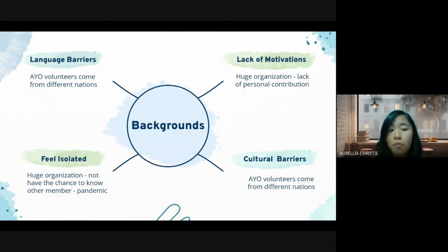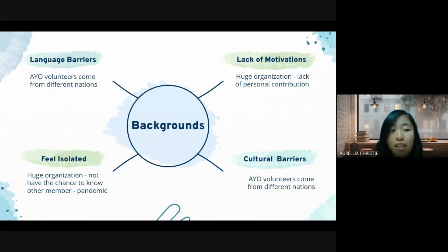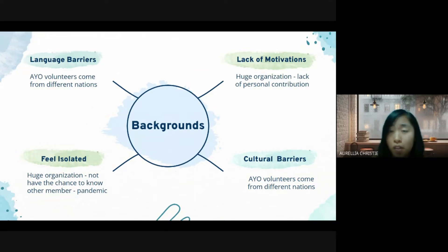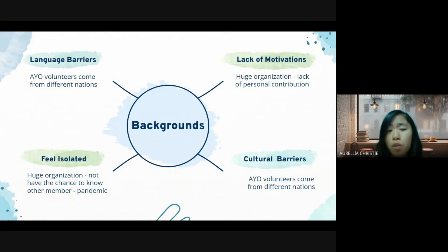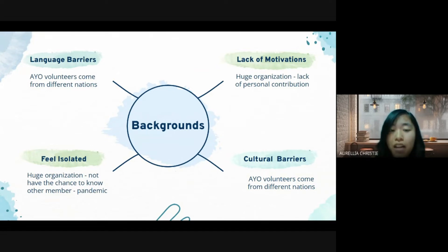Next, lack of motivation. AYO is a huge organization with a lot of volunteers, but a very large organization may cause a lack of personal contributions. With no contributions, people tend to have a lack of motivation, so many volunteers with no motivation will be such a waste. The last background is how volunteers can feel isolated. The difficulties of communication will cause volunteers to feel isolated in this huge organization.